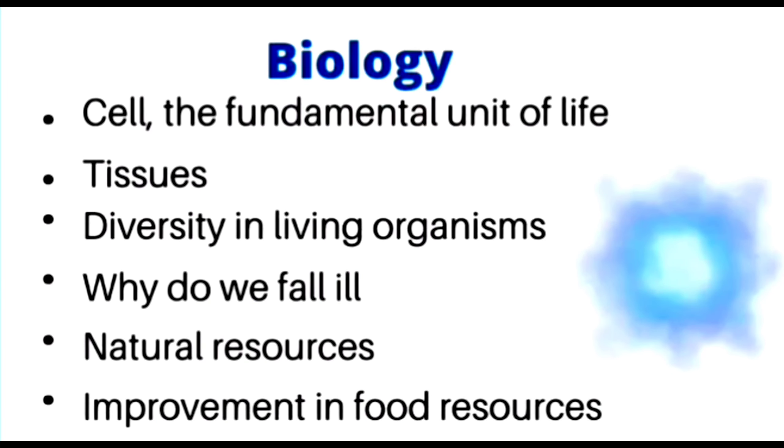Now if we look at biology, which topics will you see here? The first topic is cell, the fundamental unit of life, tissues, diversity in living organisms, why do we fall ill, natural resources, and improvement in food resources. So in this way, the total topics here will be 6. So you will see all these topics in biology, chemistry, and physics. You will have studied all these topics in your class 9 syllabus.